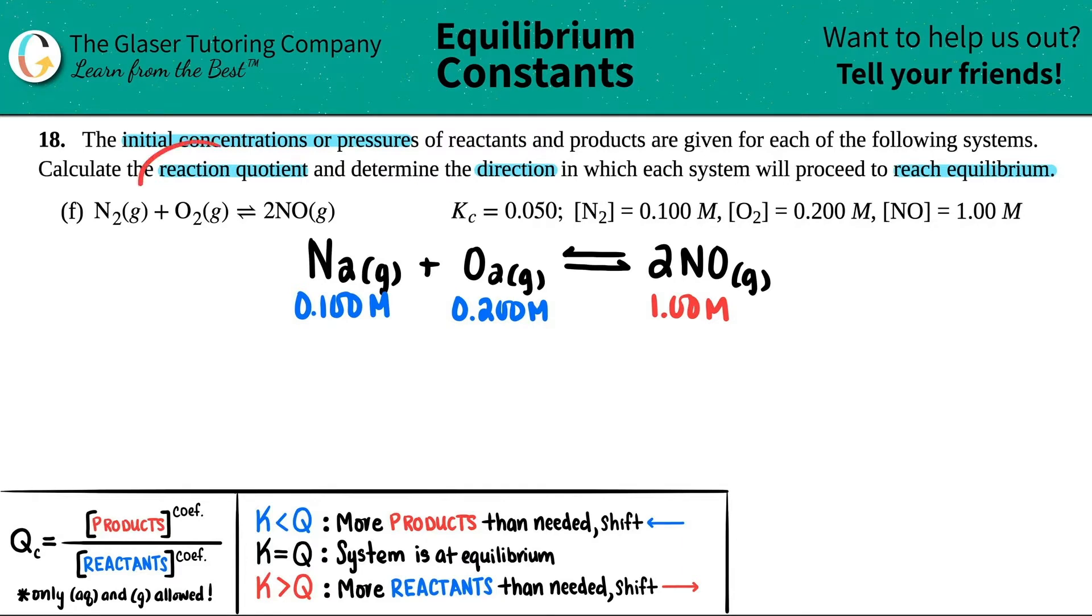So first thing we got to do is we got to find the reaction quotient. I can't really guesstimate which direction we're going because initially we're starting off with all numbers. So I can't really guess. I got to find the Q value. Now we've done tons of problems figuring out how to find or write the Q expression. So this will just be a little bit more practice. And remember, before you write the formula, just make sure only aqueous and gases are allowed. But in this case, I see that I got a gas, a gas, and a gas. So all of these are going to be in my formula.